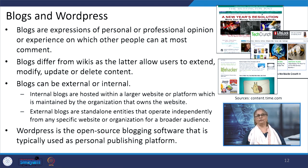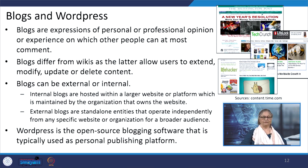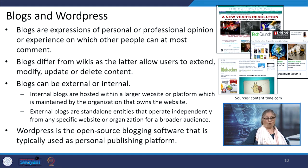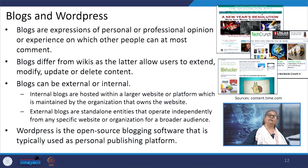Blogs can also be external or internal. Internal blogs are hosted within a larger website or platform maintained by the organization that owns the website. External blogs are standalone entities that operate independently for a broader audience. WordPress is the open-source blogging software typically used as a personal publishing platform and is often used by young authors, poets, and story writers. The images show popular examples of blogs like HuffPost, TechCrunch, and Lifehacker.